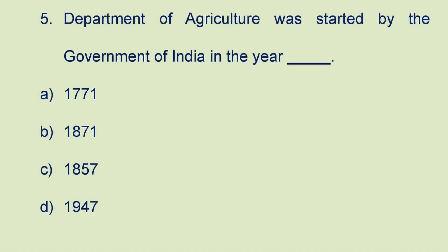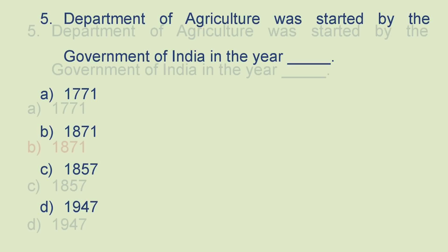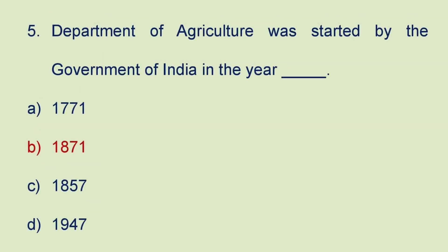Next question: the Department of Agriculture was started by the Government of India in the year A) 1771, B) 1871, C) 1857, or D) 1947. The answer is it was started in 1871.